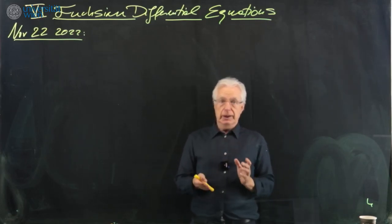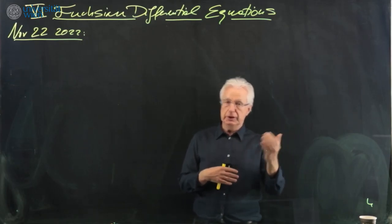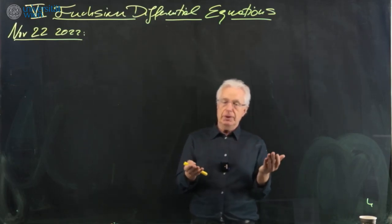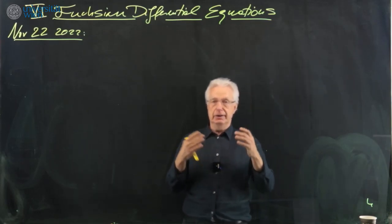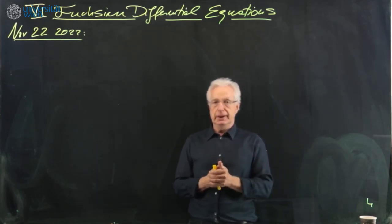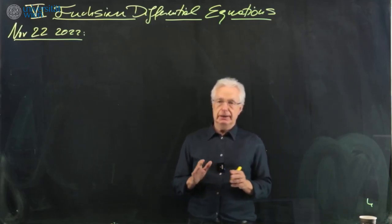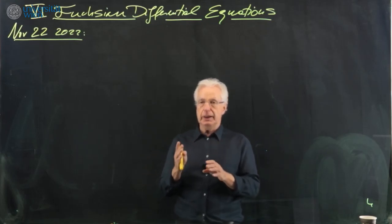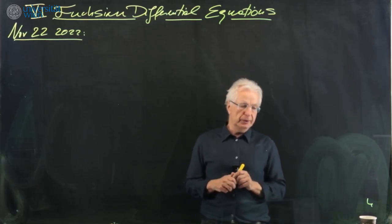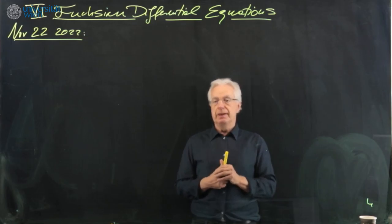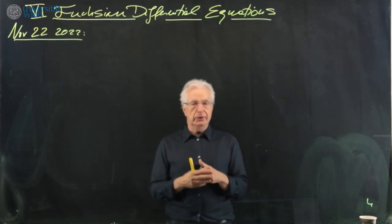There remains the case when the singularity is irregular, which means that the initial form has not the same order as the original differential operator. In this case the normal form theorem gives you only fewer solutions than you want. You would like to have n, where n is the order of the differential operator, n linearly independent solutions, but it will only give you as many as the initial form will give you. I will discuss briefly how to proceed in the irregular case.